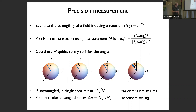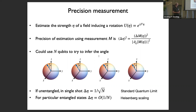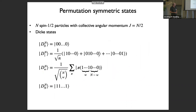The particular scenario considers estimating the strength η of a field arising from a rotation about the y-axis. The precision of estimation using a measurement operator M has a variance given by the ratio of the operator's variance to the square of the derivative of its expectation value. Using N unentangled qubits, you get shot noise — precision going like one over the square root of N, the standard quantum limit. But with particular entangled states, you can achieve a standard deviation going like one over N: Heisenberg scaling.